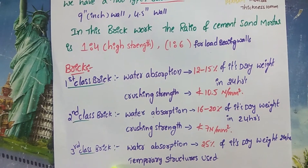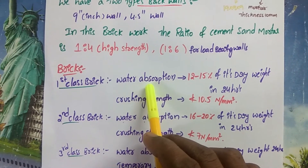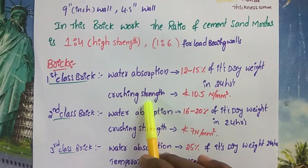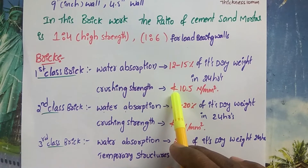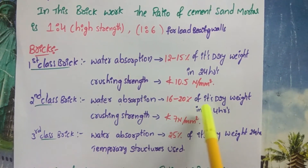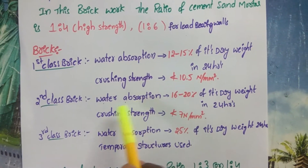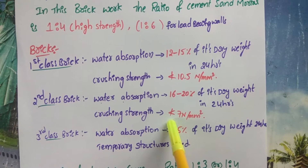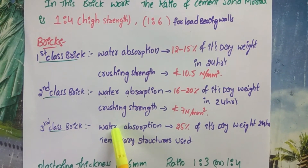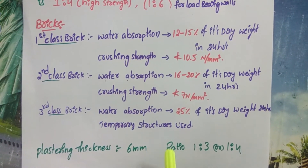There are three types of bricks: first class brick, second class brick, and third class brick. First class brick has a water absorption of 12–15% of its dry weight in 24 hours, and a crushing strength of not less than 10.5 N per mm². Second class brick has a water absorption of 16–20% of its dry weight in 24 hours. Third class brick is used for temporary structures.